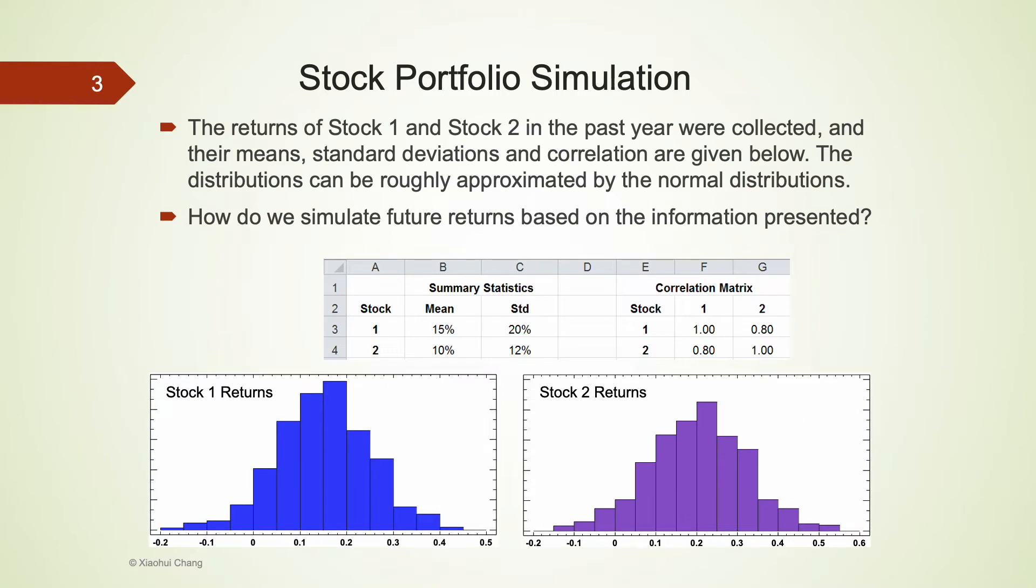This is indeed the case for stocks 1 and 2. We collected the returns of these two stocks from the last year. Their means and standard deviations are given in the table. The average return of stock 1 is 15%, while that for stock 2 is 10%. Stock 1 has a higher risk than stock 2, as measured by the standard deviation. The returns of both stocks have bell-shaped distributions.